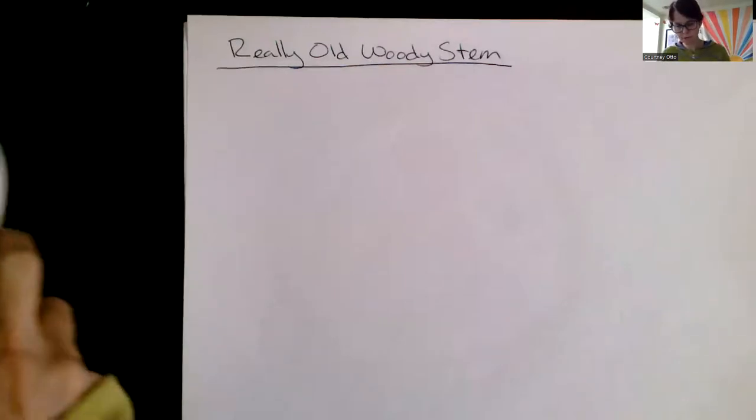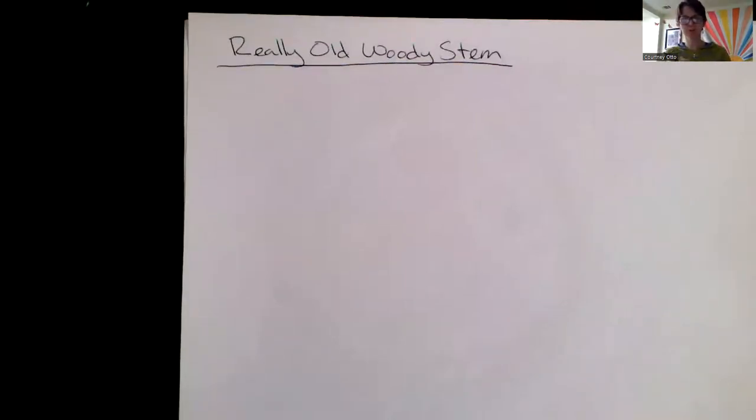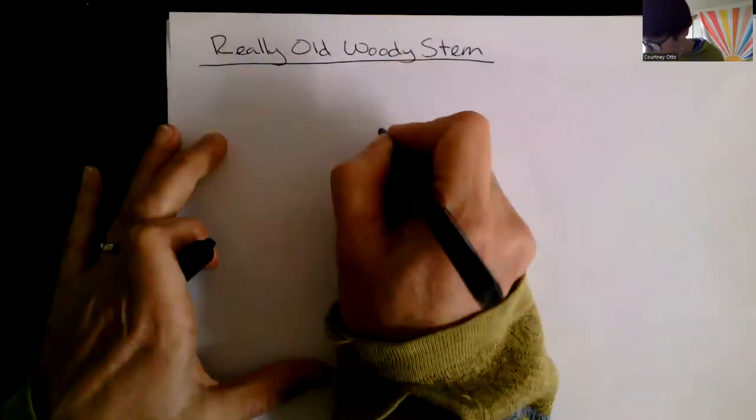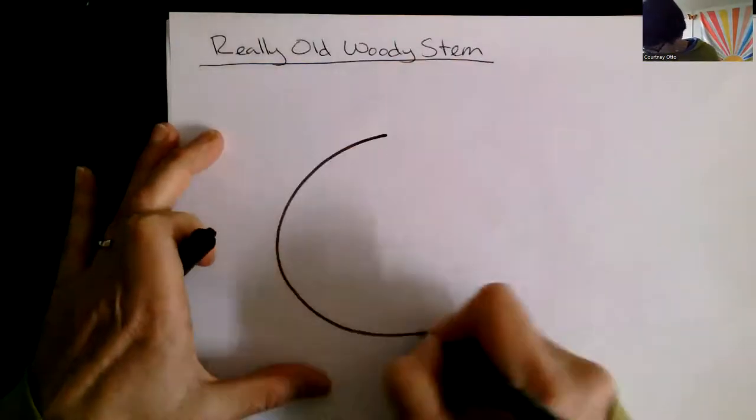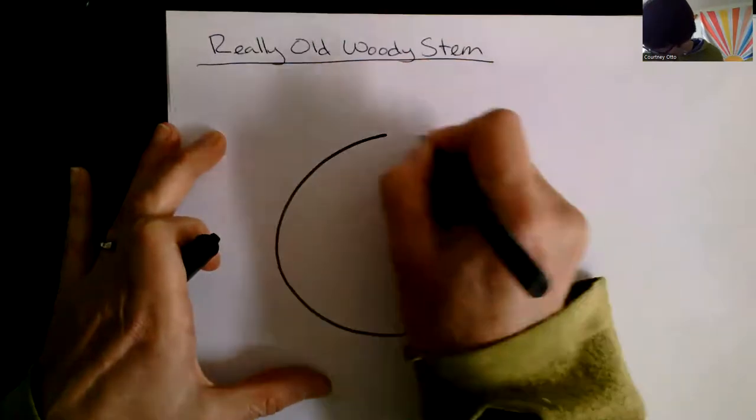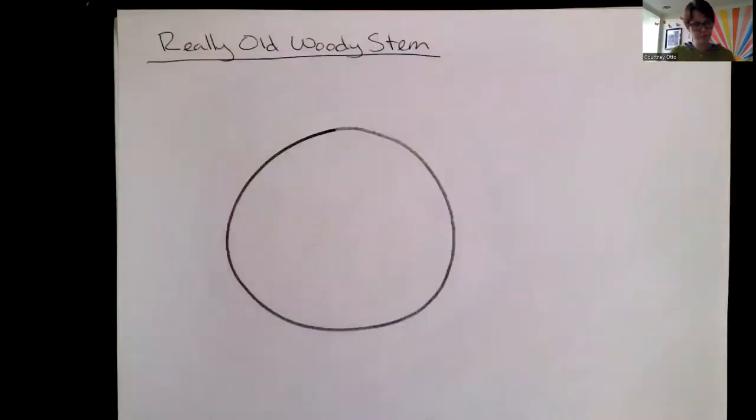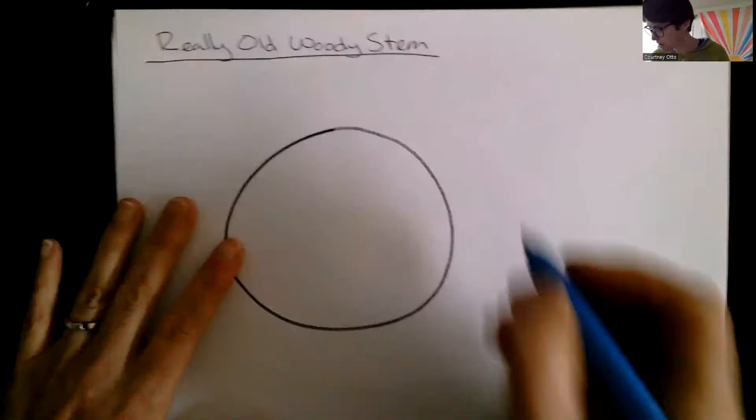I want to start this one in the same way that I did the last one. I want to start it from the vascular cambium. So the vascular cambium is just a ring of cells all the way around.